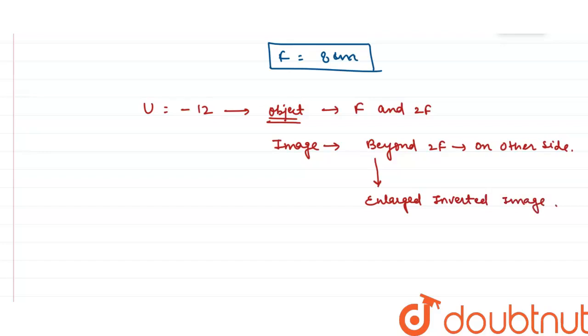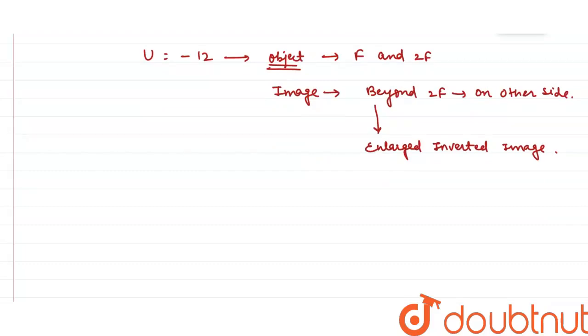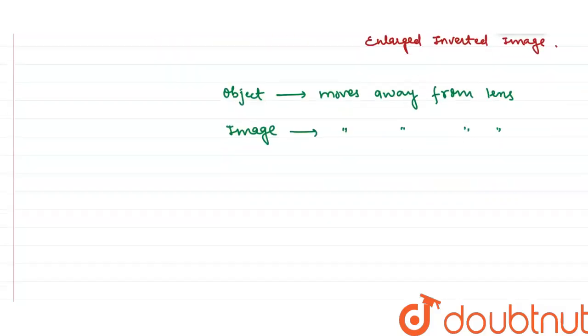Now object moves away from the lens. When object moves away from the lens, that means image also moves away from the lens. And when image moves away from the lens, that simply means screen also moves away from the lens. So the answer is the screen moves away from the lens.